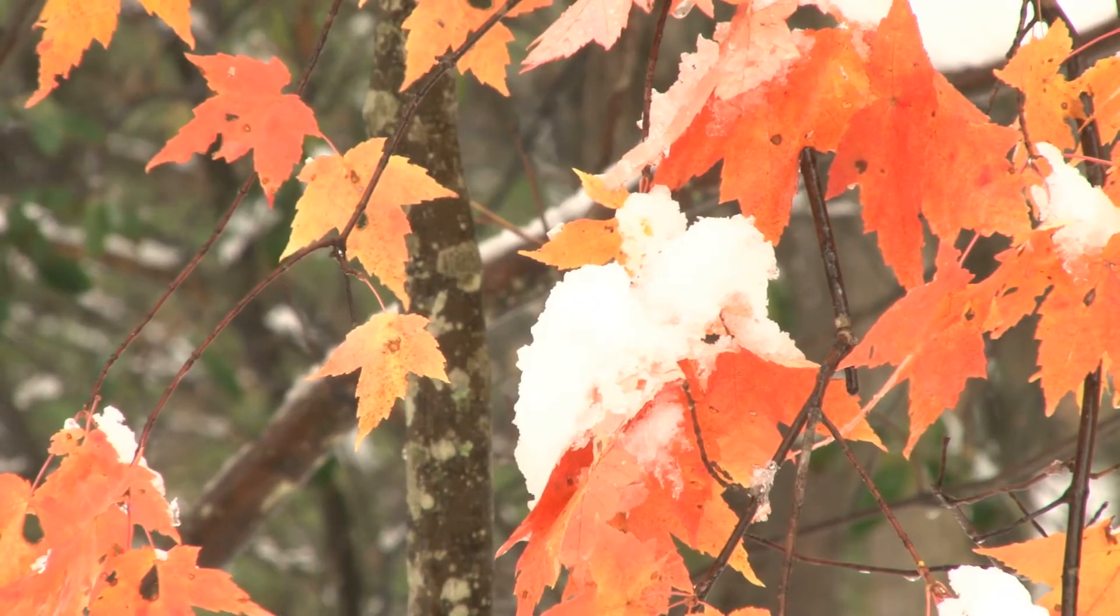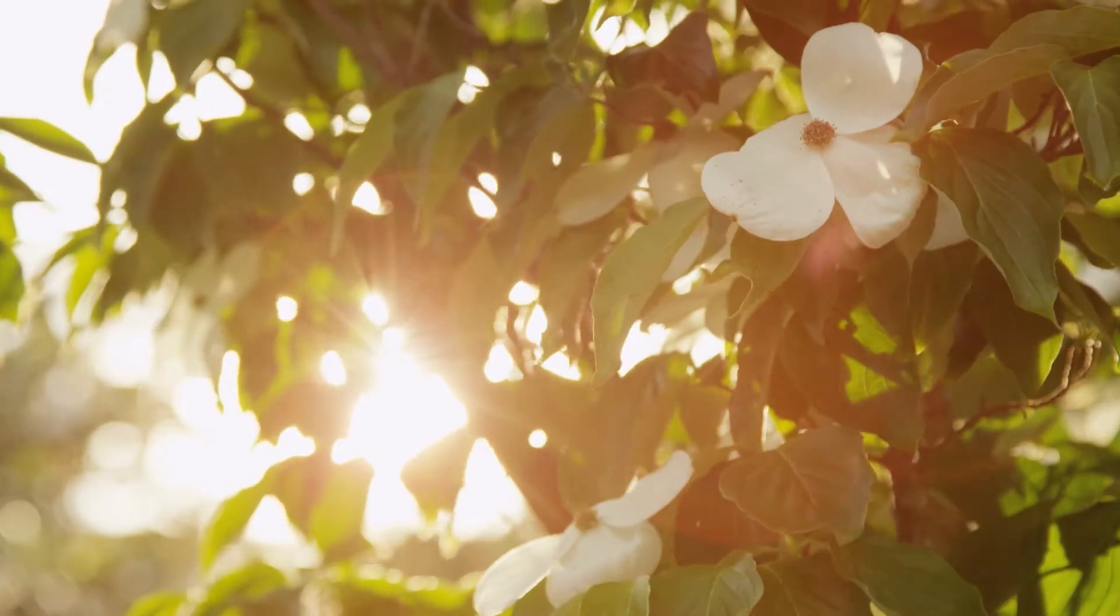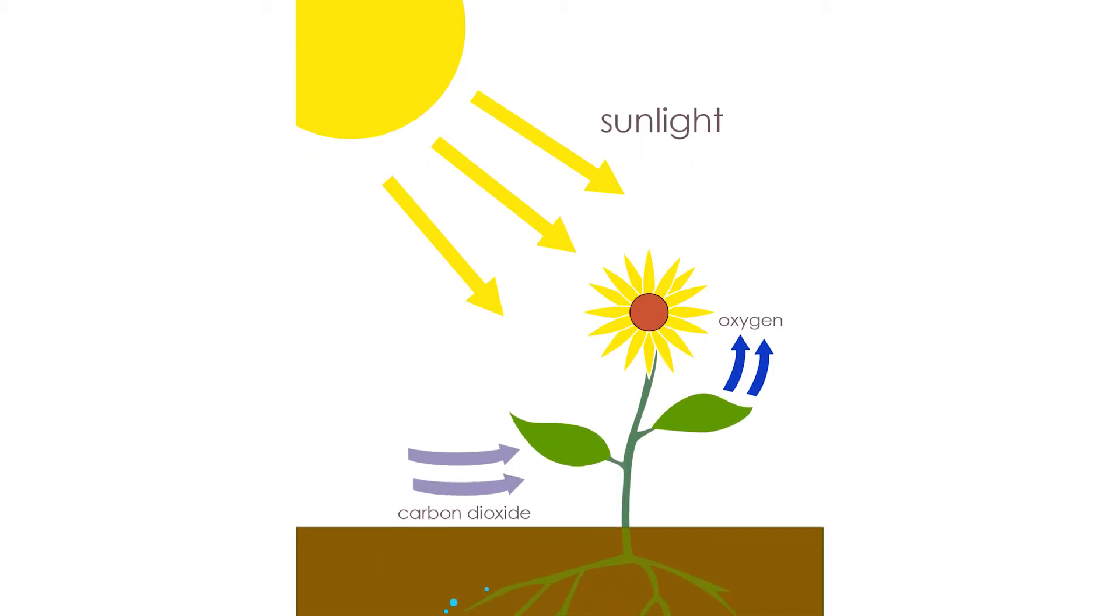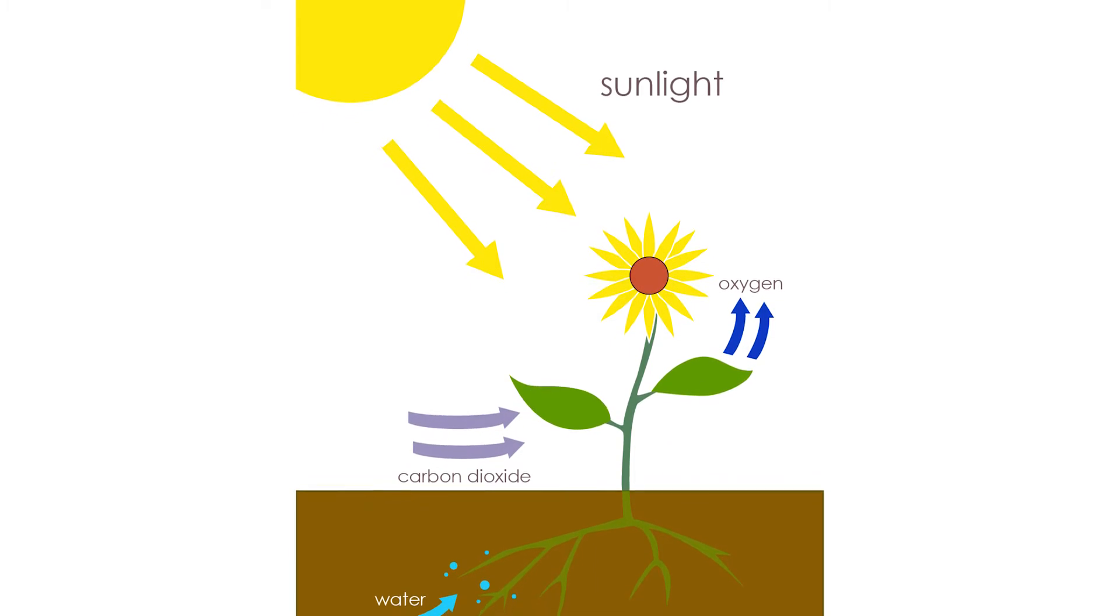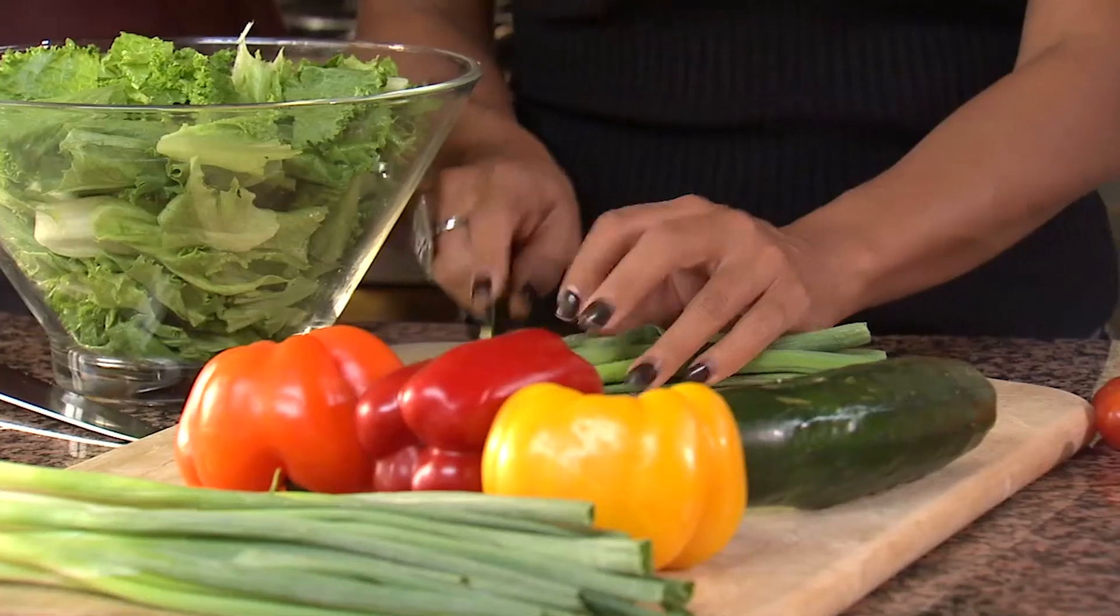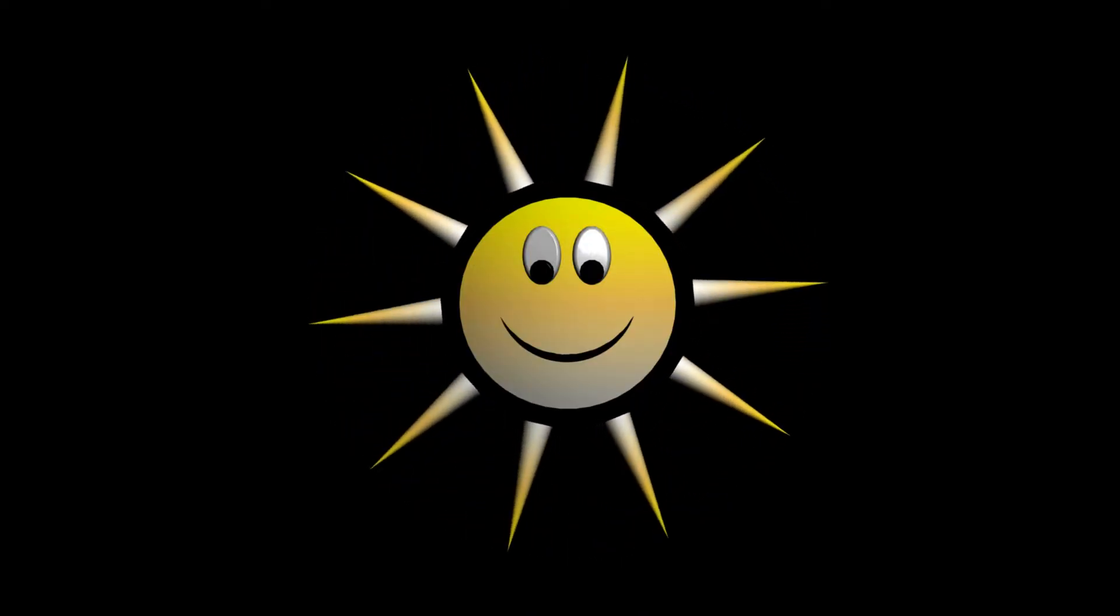13. The Sun produces energy that supports all life on Earth throughout a process called photosynthesis. Plants convert the Sun's light into chemical energy which nourishes and fuels their own growth. Then plants give out oxygen and feed animals and people. Needless to say, the Sun is pretty important.